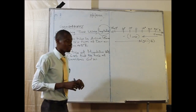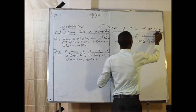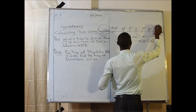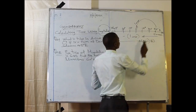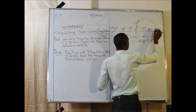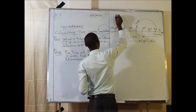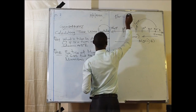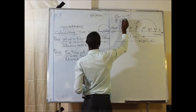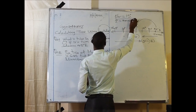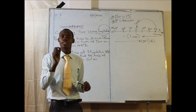According to our question, the person is at 45 degrees east and moving all the way to zero degrees, which means they will lose time. Our formula says that every one hour covers 15 degrees, or every 1 degree is equal to 4 minutes. These two things are very important when it comes to calculation of time using longitude.